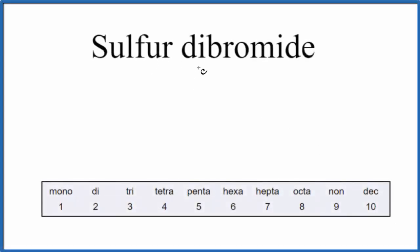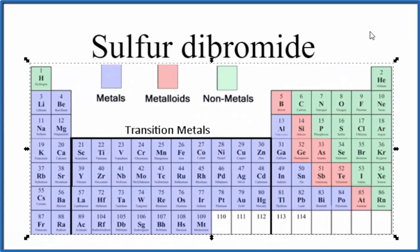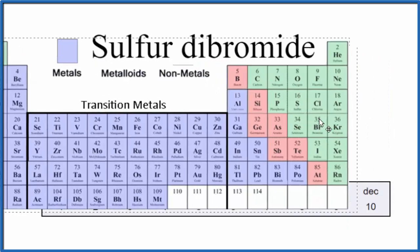To write the formula for sulfur dibromide, we first need to figure out what type of compound we have. If we look at the periodic table, we can see sulfur is a non-metal, and bromine is also a non-metal. Two non-metals means that we have a molecular, also called covalent compound, so we don't need to worry about the ionic charge.